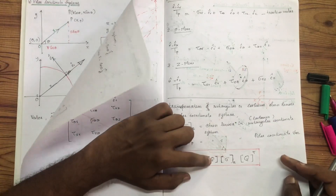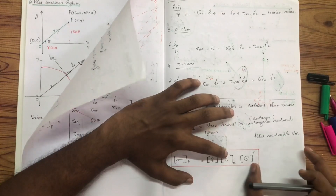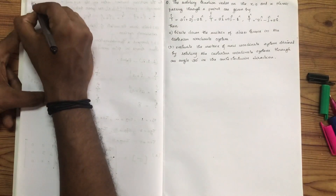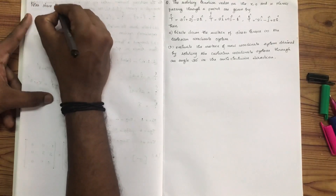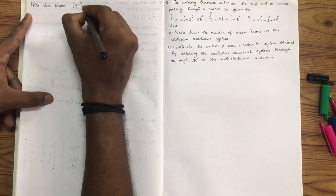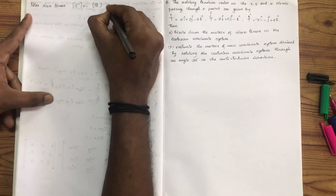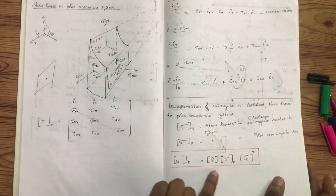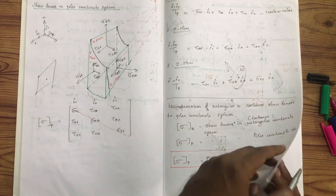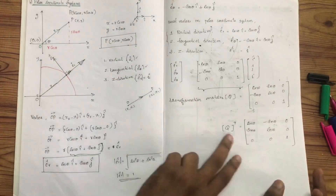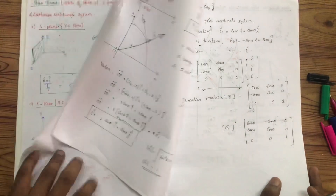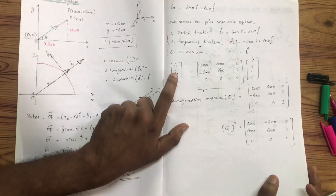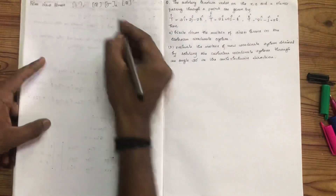Sigma P is equal to transformation matrix. Sigma R is equal to Cartesian coordinate system. This is the polar stress tensor. Sigma P is equal to transformation matrix times the Cartesian coordinate system — or rectangular coordinate system — transposed. Q1 is equal to cos theta and sin theta. We have a transformation matrix.